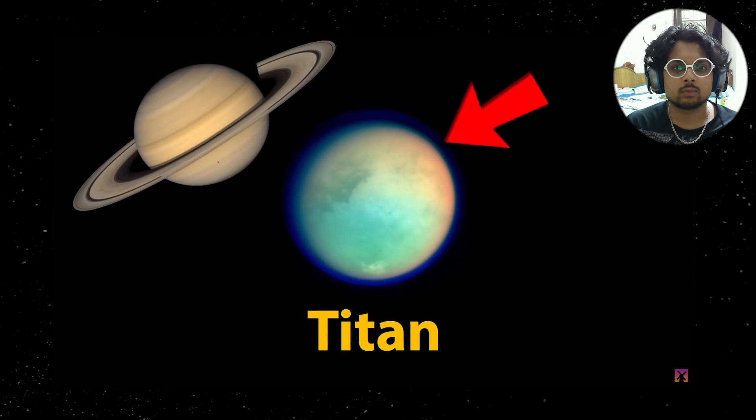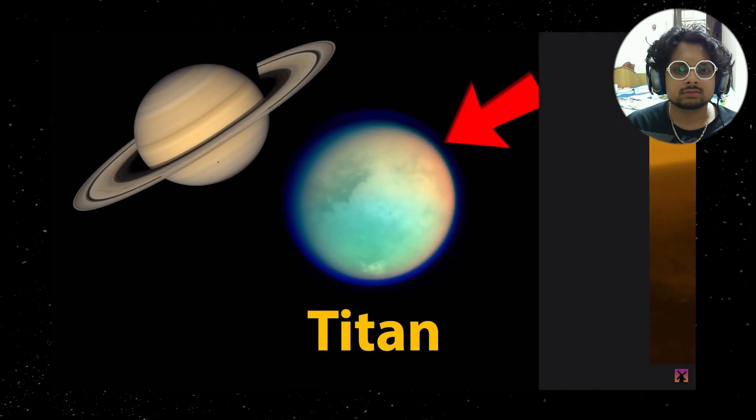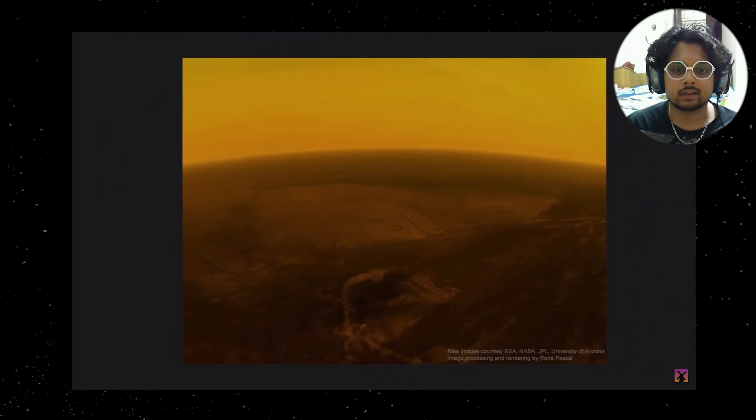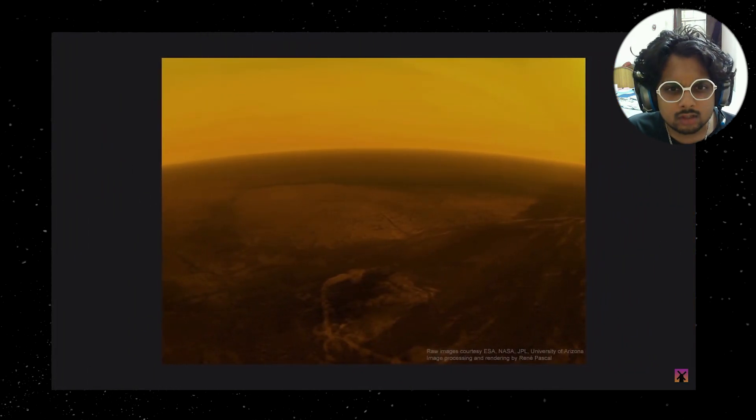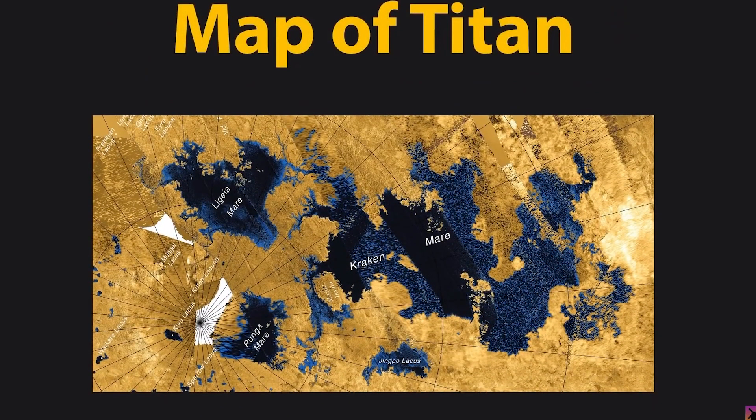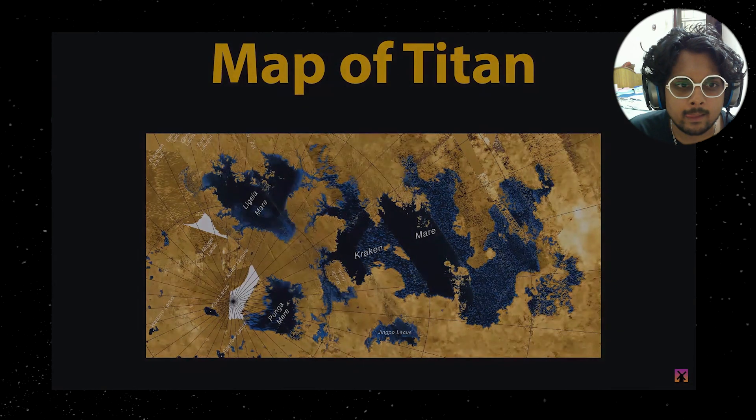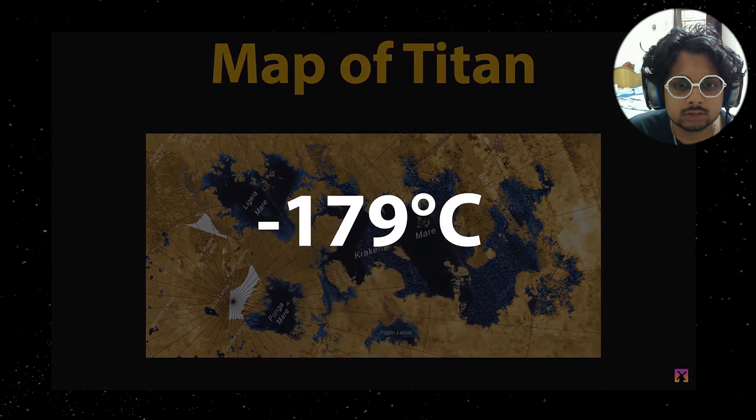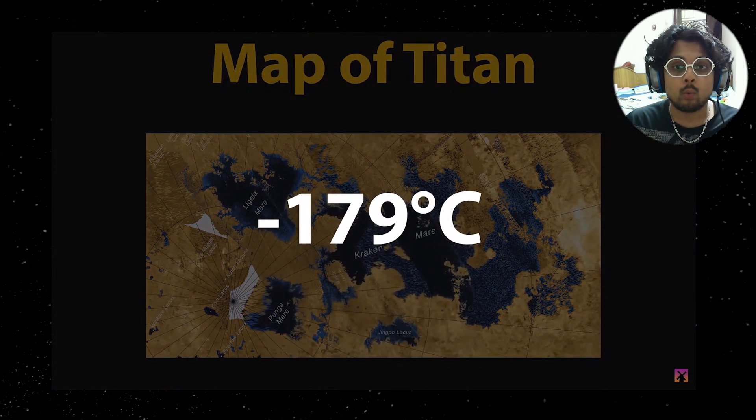It has such a thick atmosphere that we didn't even know what its surface looked like until 2005, which if you're curious, it looks like this. But Titan is a very bizarre place. It has an atmosphere, rivers and lakes, and it even rains like on Earth. Wow. But the temperature is a bone-shattering negative 179 degrees Celsius, which is so cold that water...